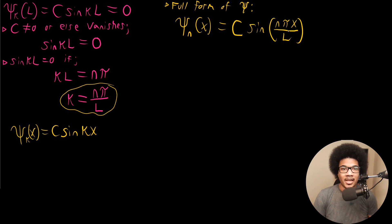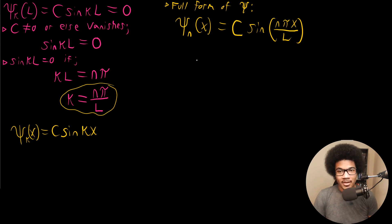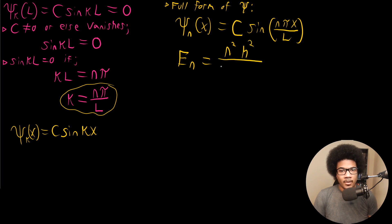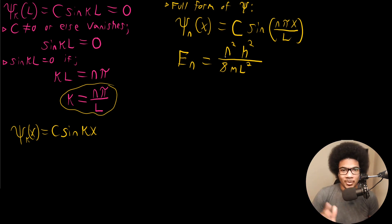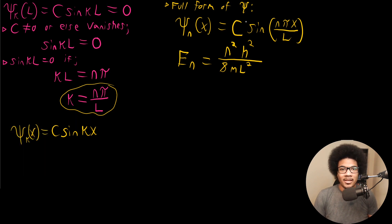This yields our acceptable wave function. We can also get an acceptable energy expression. Applying the Hamiltonian to the wave function gives energy eigenvalues; the acceptable energy expression is E_n = n squared h squared over 8 m L squared. The last piece of business is determining what C is — C is our normalization constant, so we have to normalize this wave function.